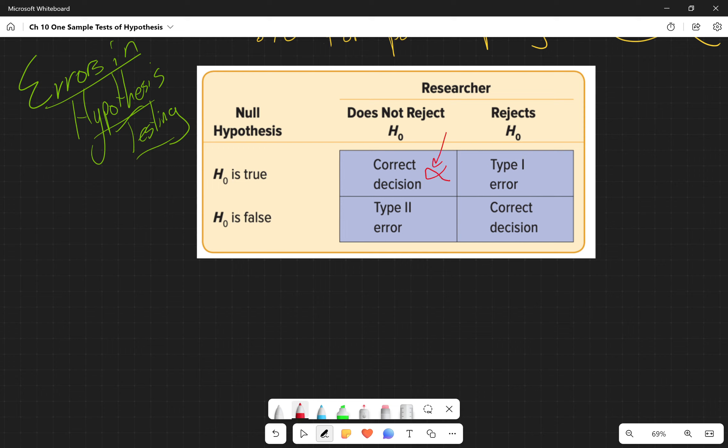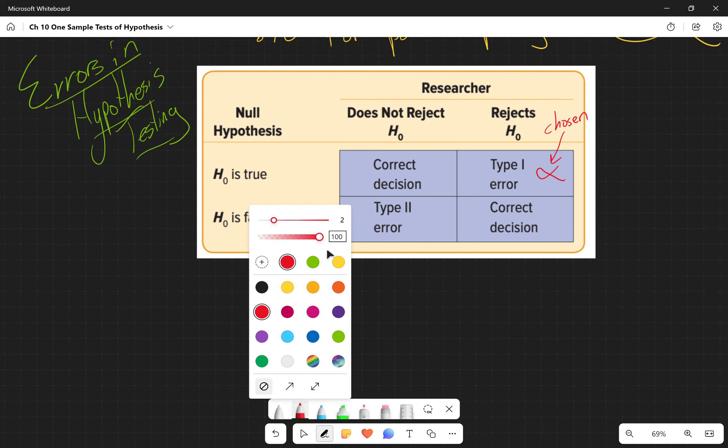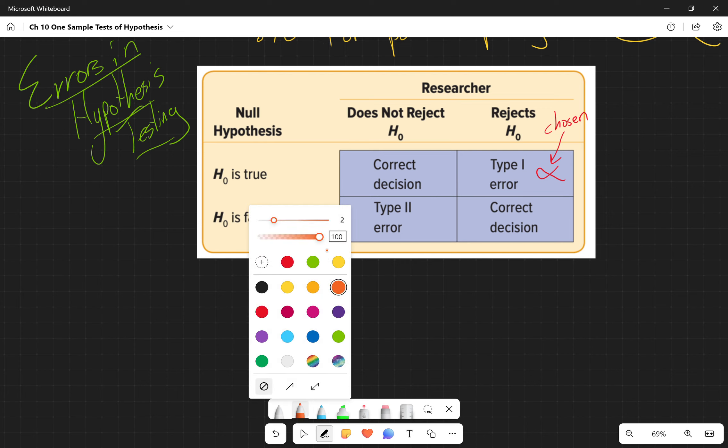So this alpha here is the Type I error, and this is chosen usually by us or by the prompt. And then our Type II error is signified by beta, and we can calculate this one. I say can calculate because we're not going to calculate it in this class.